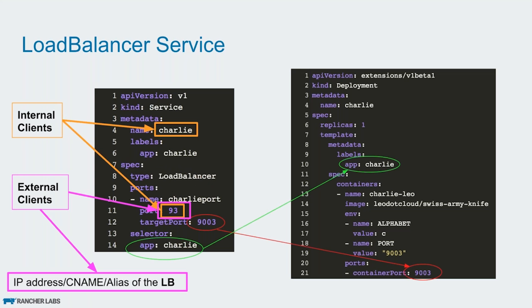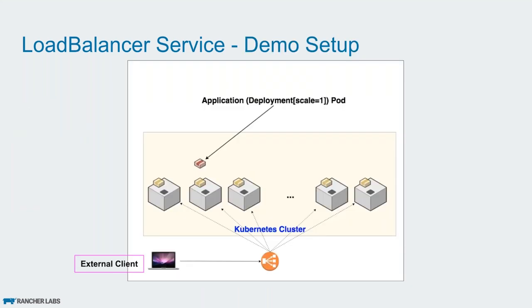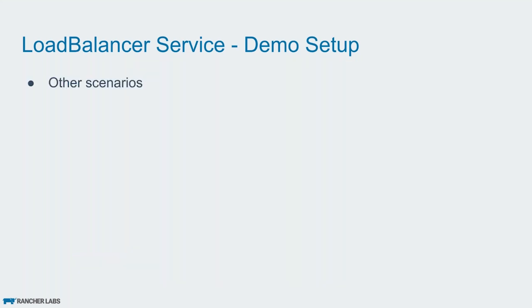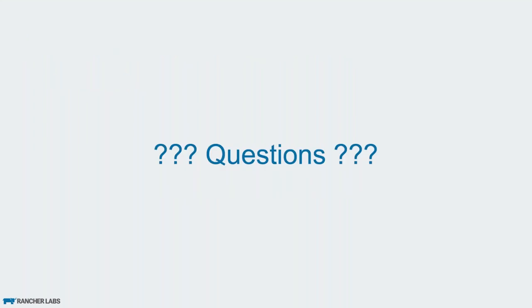Here's what happens behind the scenes: you have a deployment — let's call it Charlie — and then you create a service. At line number eight, you are specifying the type of the service as a load balancer. You can see the port mappings, the label selectors, and internal clients can access your service using the service name colon the port. External clients can access your app using either the IP address of your load balancer, or the CNAME, or an alias for the load balancer.